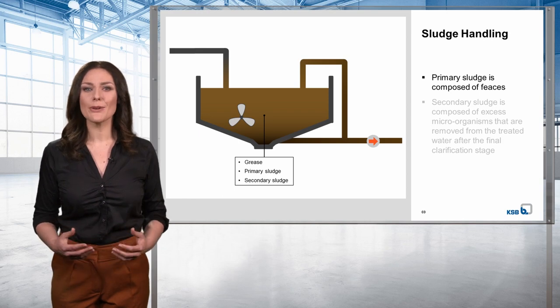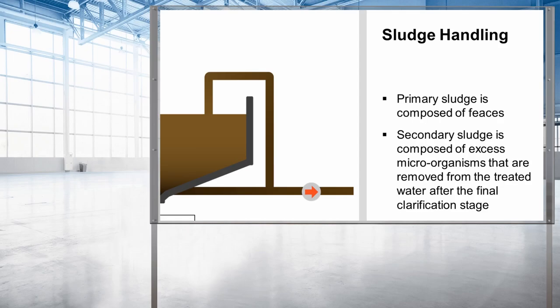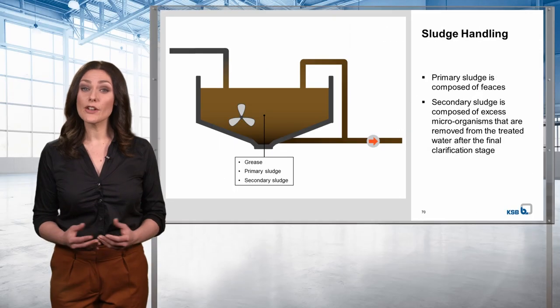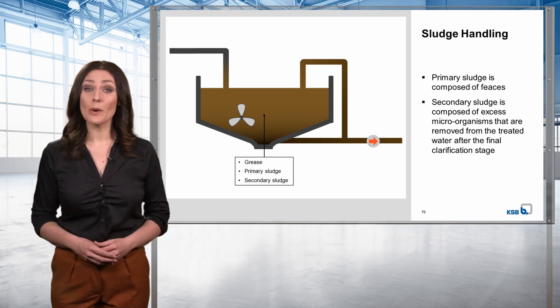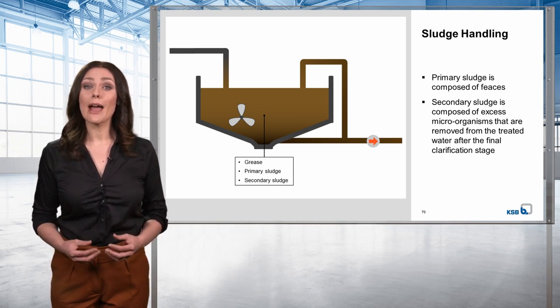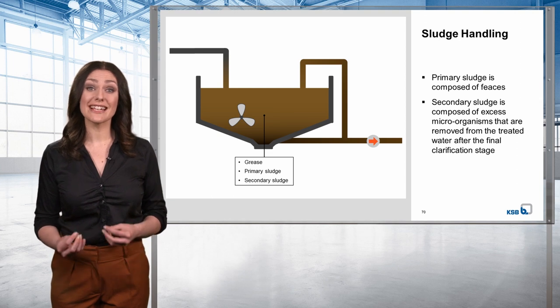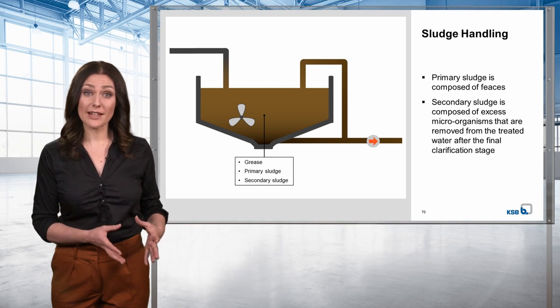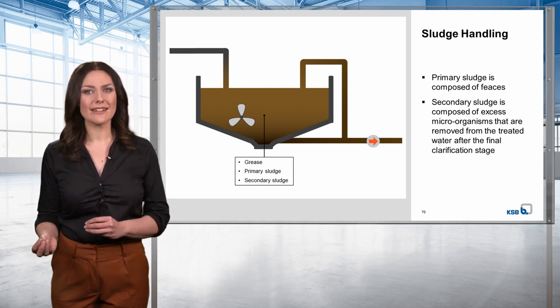Primary sludge is mainly composed of feces. The terms secondary or excess sludge define excess microorganisms that are removed from the treated water after the final clarification stage. The different types of sludge can either be treated together or separately. The first option is mainly used in smaller wastewater treatment plants, where primary and secondary sludge are treated together in so-called mixed sludge tanks — for example, 60% primary sludge and 40% secondary sludge.